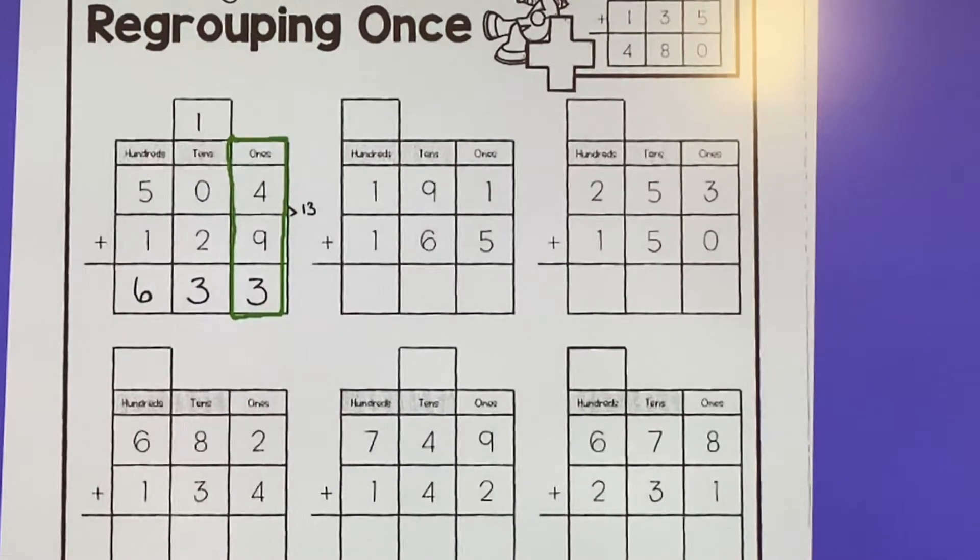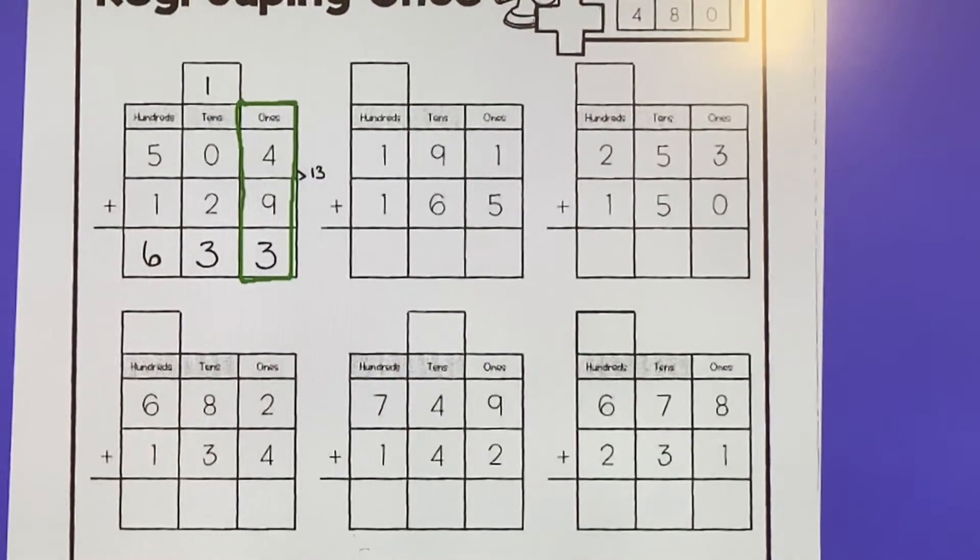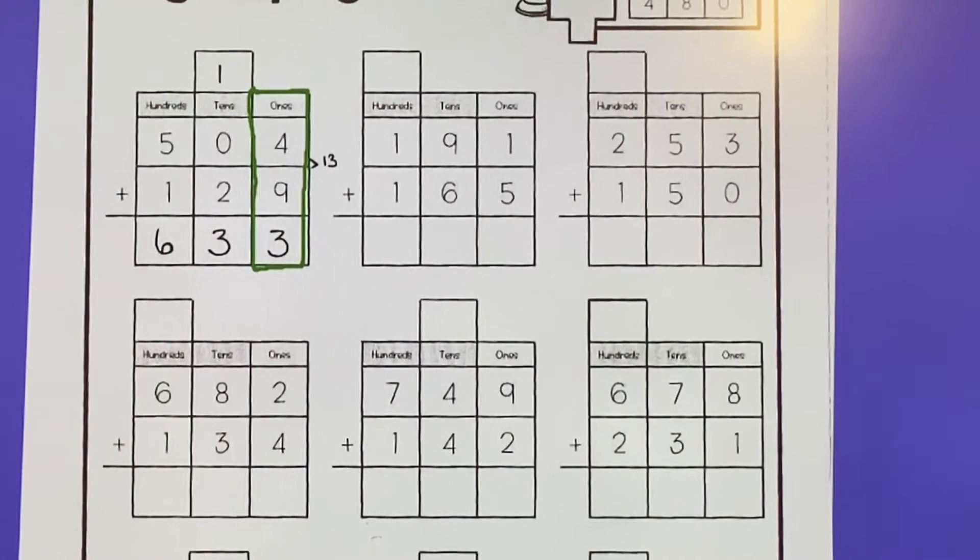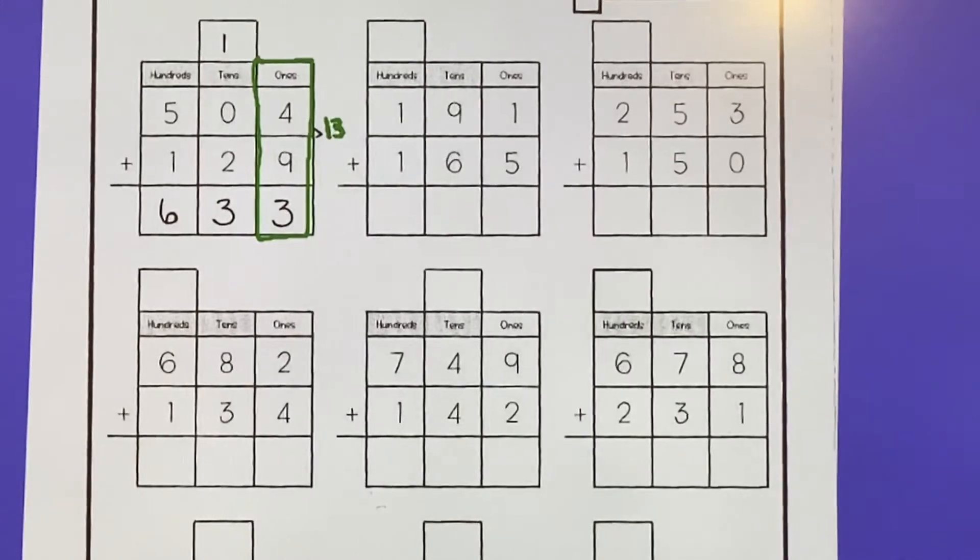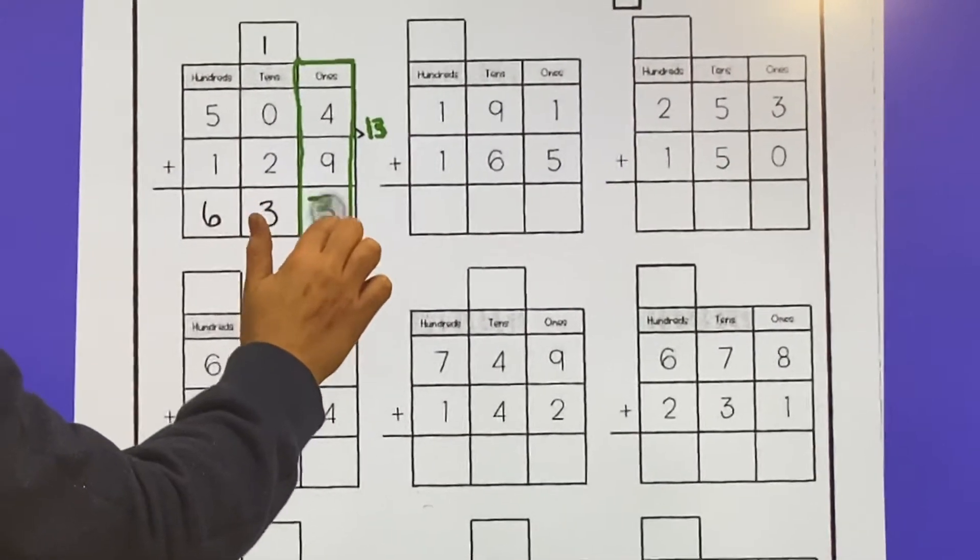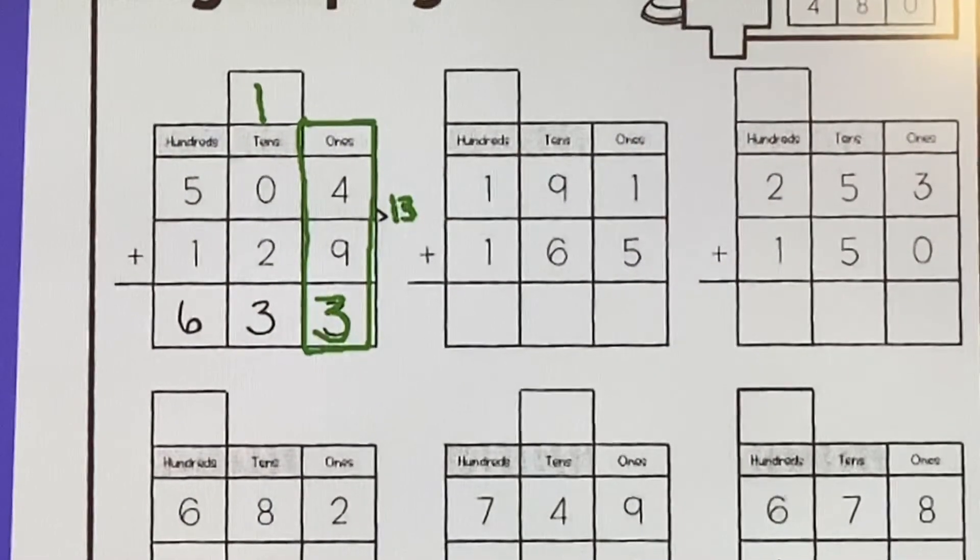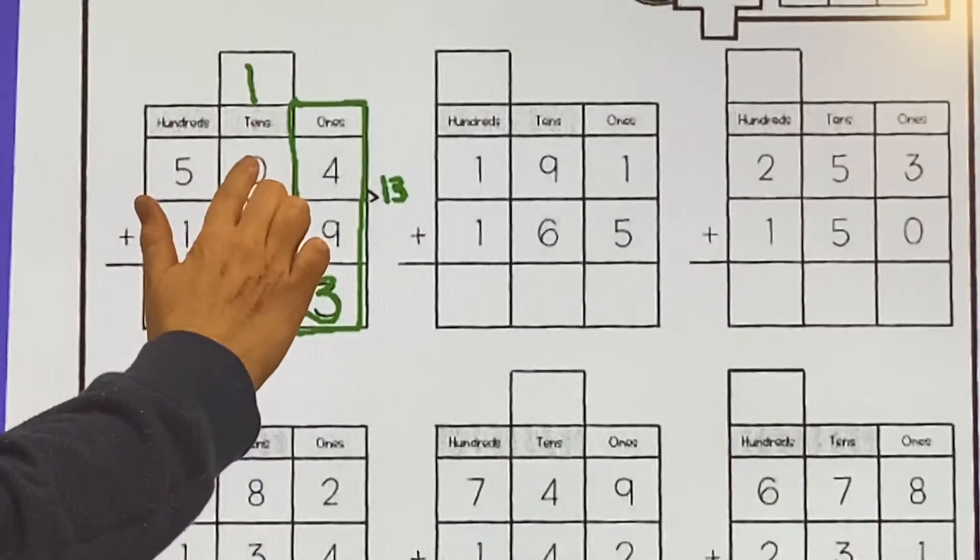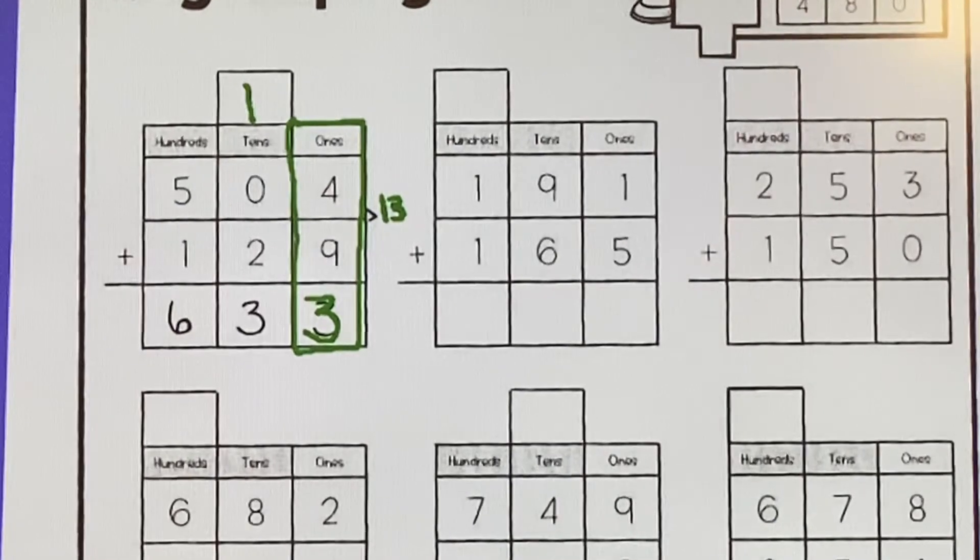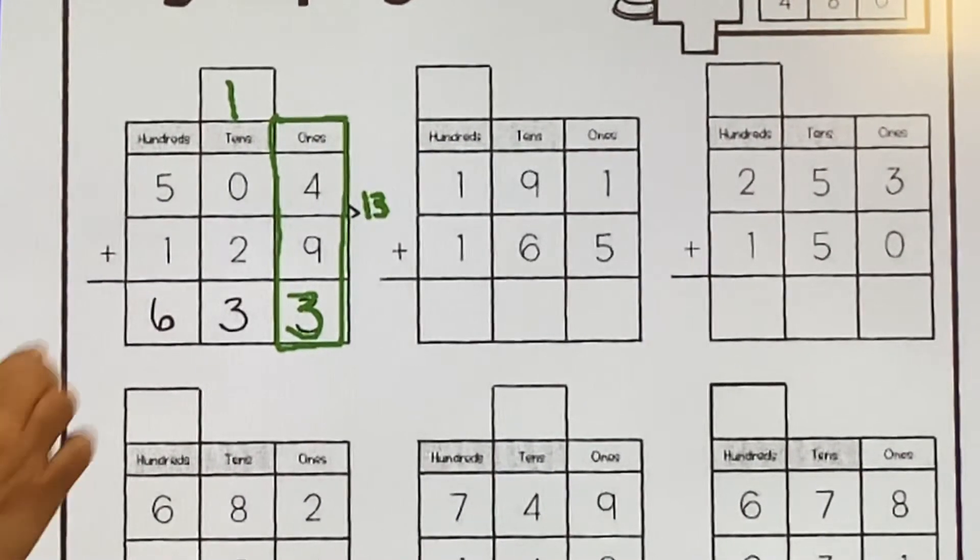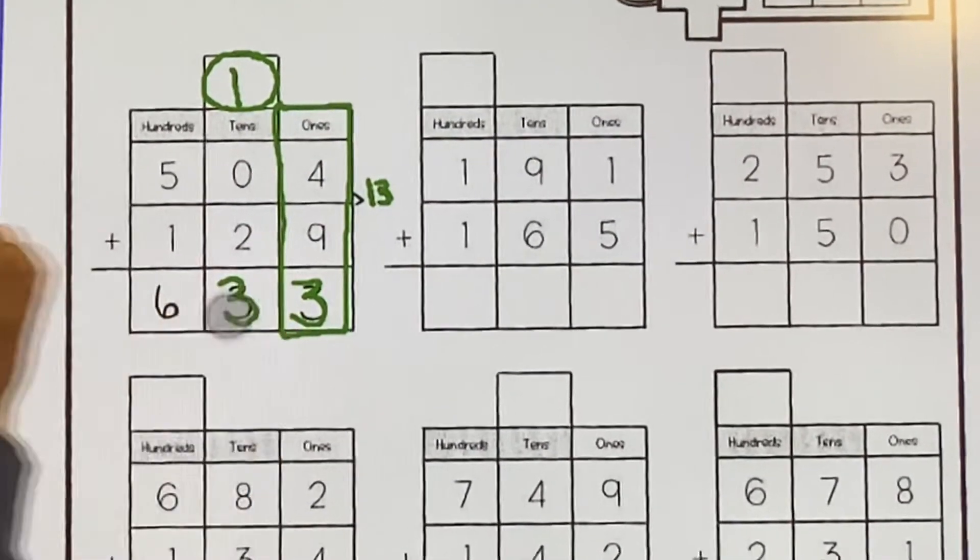You're going to start right here in the ones place. If you have a number line, you're going to use your number line to help you. If you have a touch master, you're going to use that to help you add. So you start in the ones place with four plus nine. If you're not sure, you're going to start on four and count up nine and you should get 13. You can see that a little 13 is drawn right here. That means you have three ones and one tens. So you're going to take that one tens and regroup it and put it above the tens place. Now we're going over to the tens place and I'm going to say zero plus two. That's pretty easy because if you have nothing and you add two, you get two. And then you have to remember to add that one at the top. So two plus one is three.